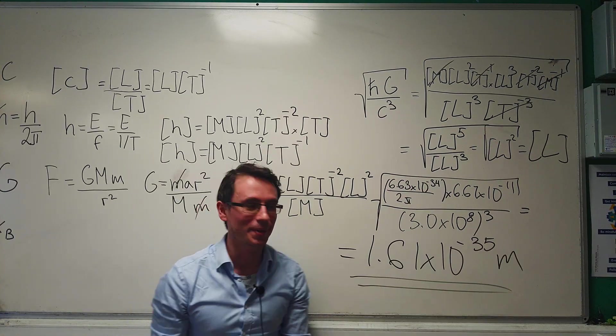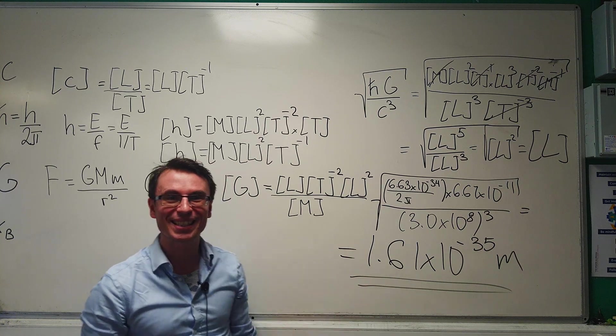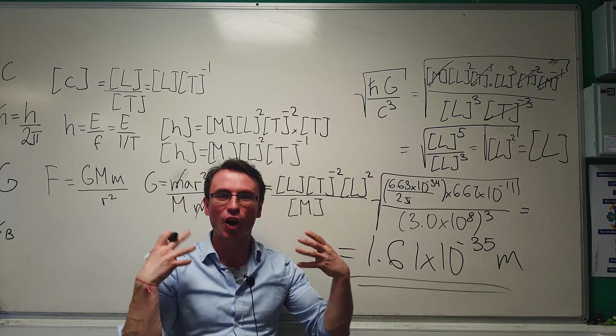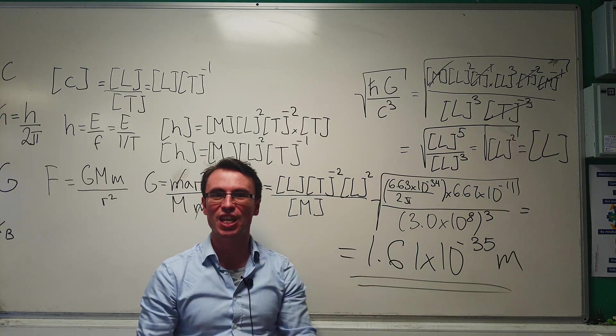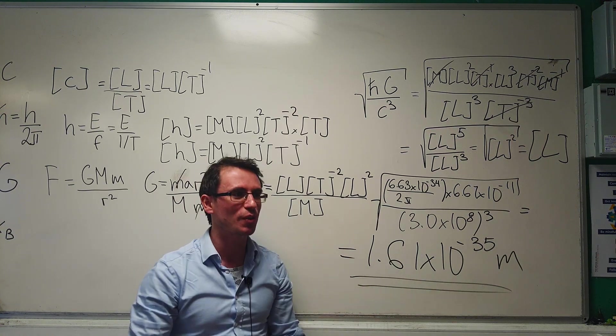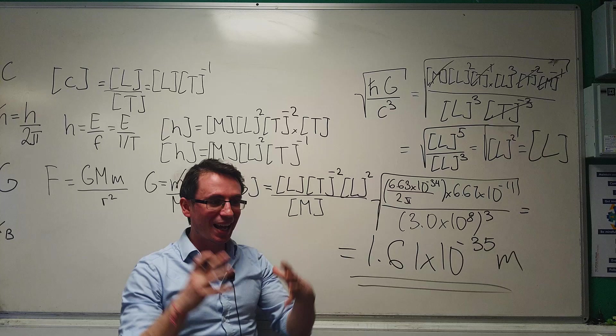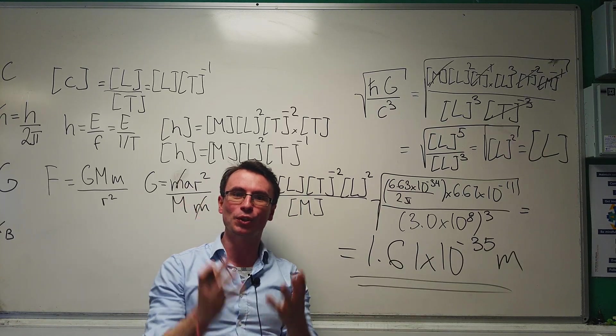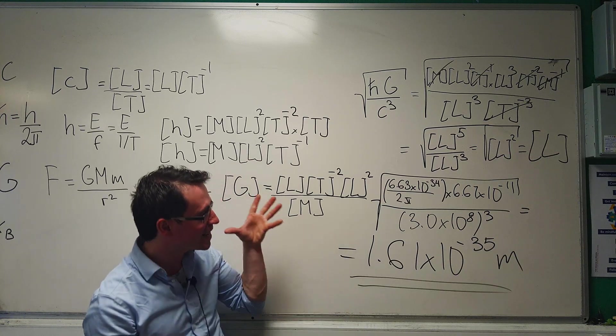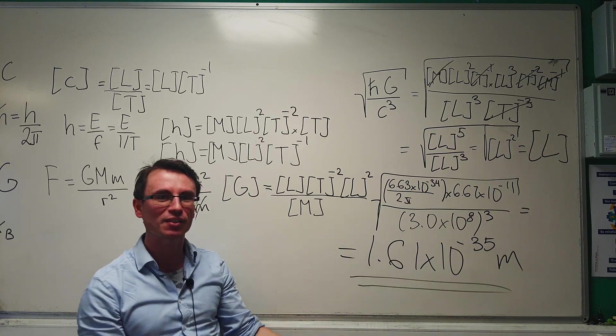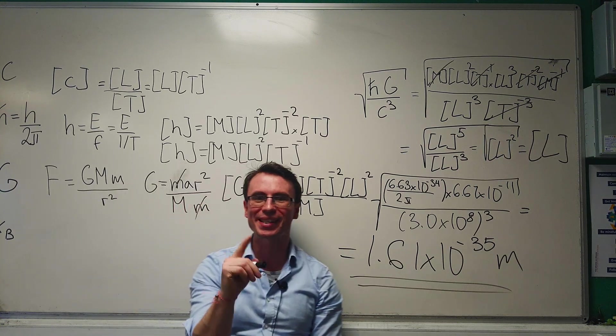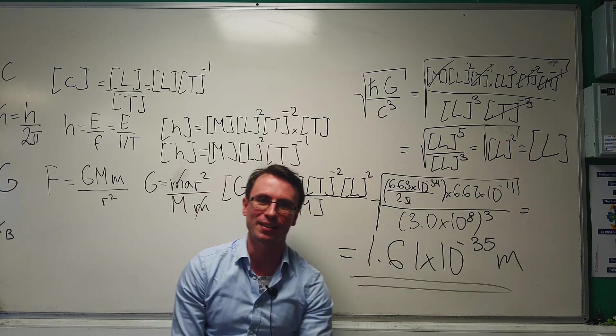According to our current theories, lengths below this length do not make any physical sense. You get 100% uncertainty in the position of particles. And additionally, you need a quantum theory of gravity to really understand the fuzziness below this number, 1.61 times 10 to the power of minus 35 meters.